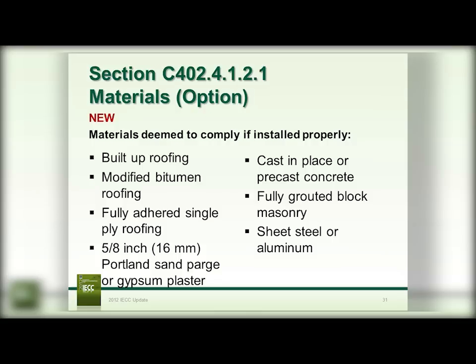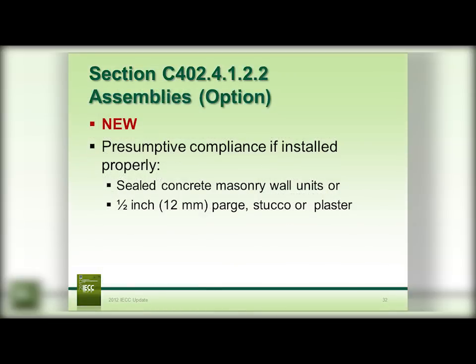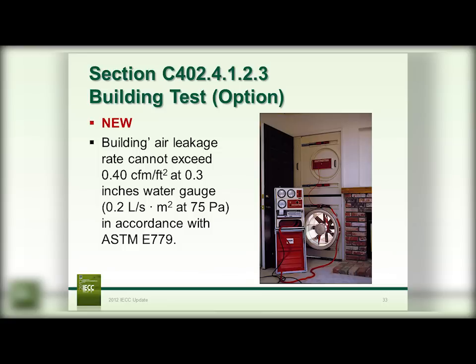All of those materials are deemed to comply if they are properly installed. There are also certain assemblies that are presumed to comply — sealed CMUs, or 12-millimeter or half-inch parge of stucco or plaster can be an assembly option to demonstrate compliance. There is also a building test option for commercial buildings. Once again, you have three options and can choose between them, utilizing the one or all that is appropriate for your project.